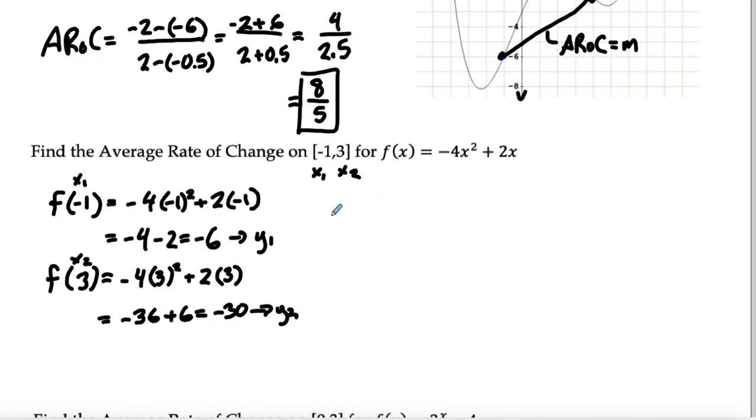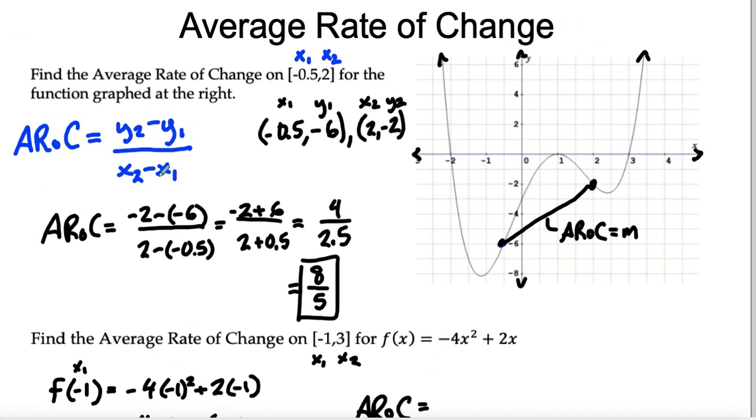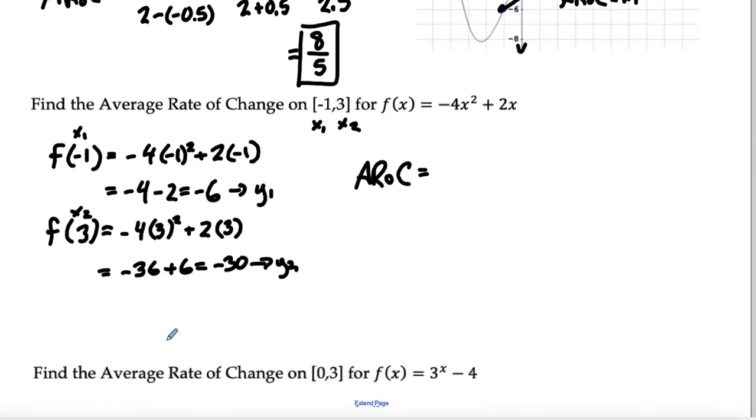Now I have all my information here. You could write it out as coordinate points if you want, but I'm going to put it into my function now. I know that ARLC from the top here is y2 minus y1 over x2 minus x1.